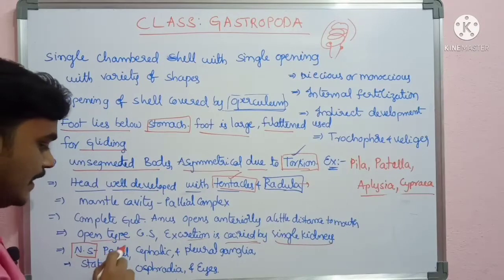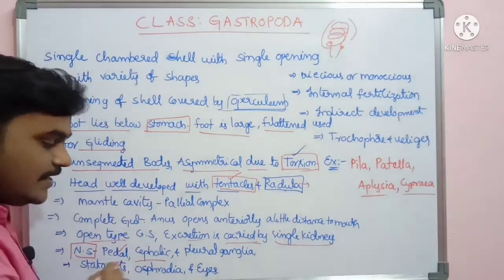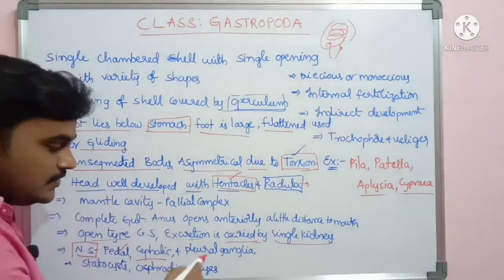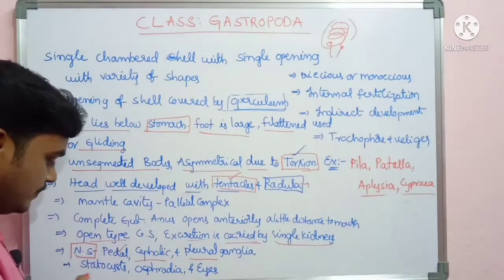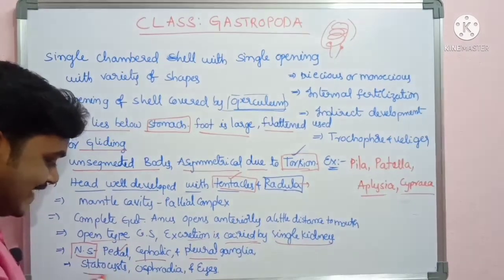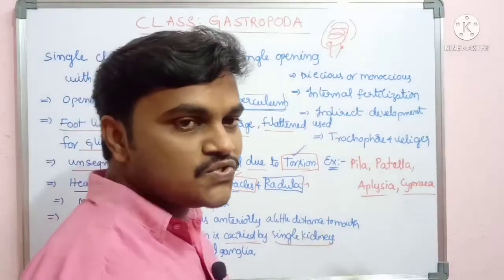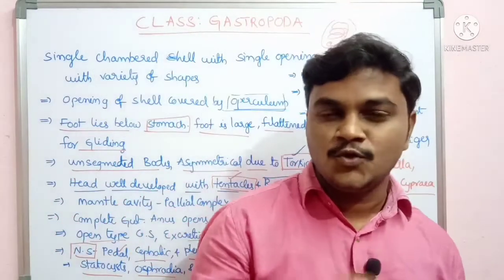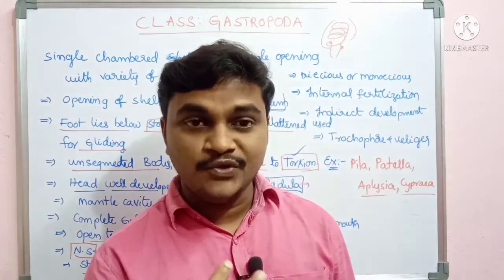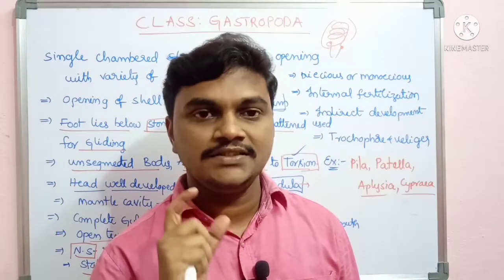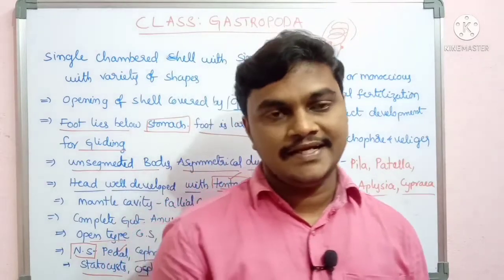The nervous system contains pedal ganglia at the region of the foot, cerebral ganglia at the region of the head, and pleural ganglia at the region of the gills, along with additional ganglia. Statocysts, osphradia, and eyes are the sensory structures. Statocysts are for balance, osphradia are used to test the quality of water, and eyes are present on the head region.